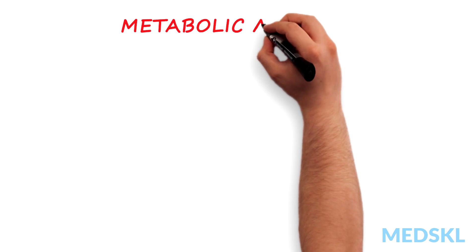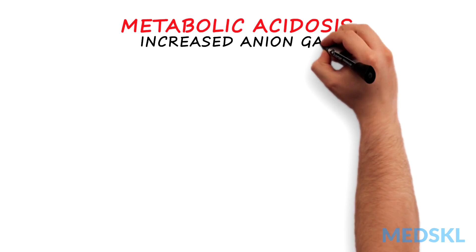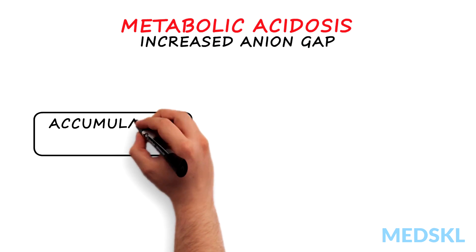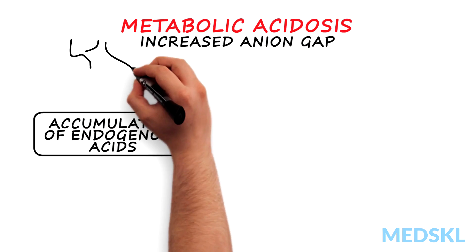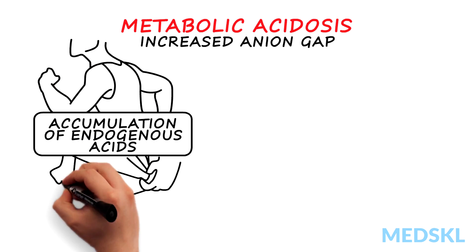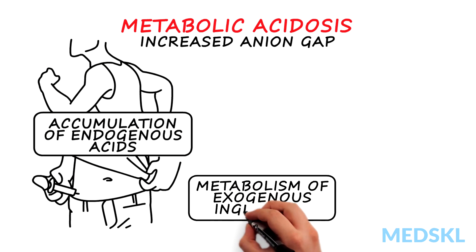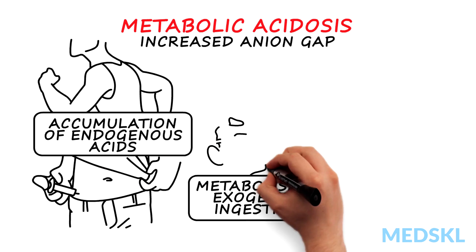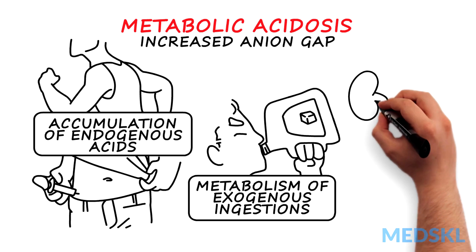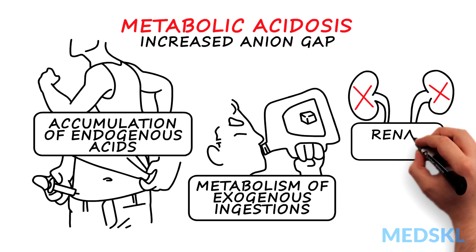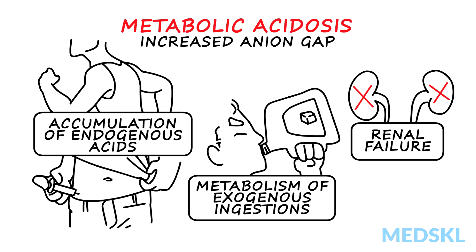Metabolic acidosis associated with an increased anion gap may be caused by the accumulation of endogenous acids, such as lactic acid and ketones, the metabolism of exogenous ingestions, including methanol and ethylene glycol, or the inability of the kidney to regenerate bicarb because of renal failure.